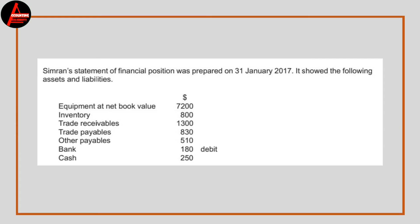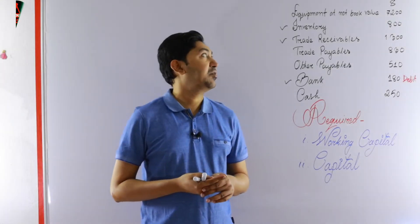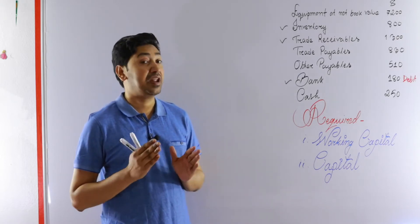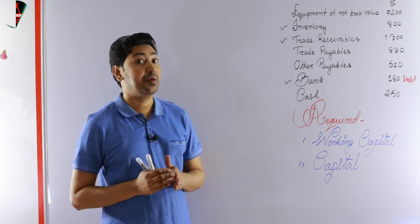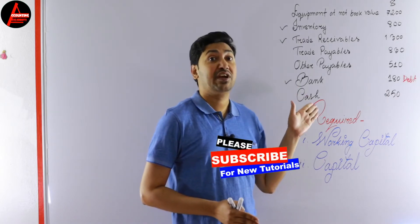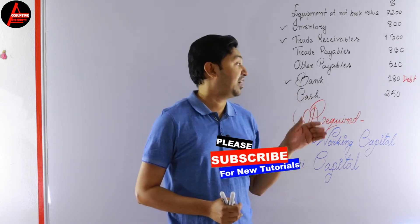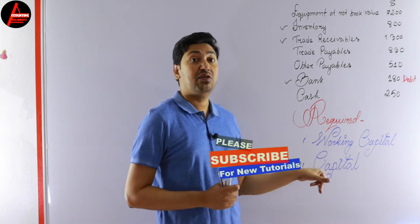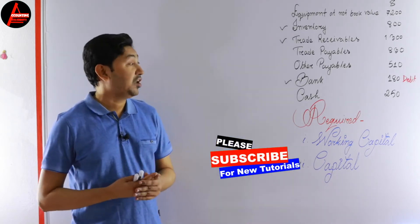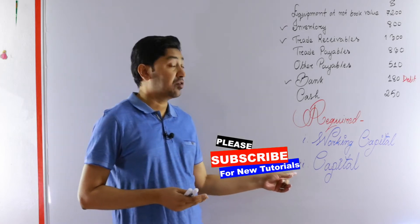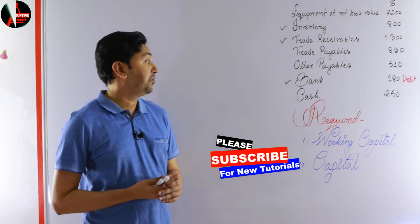It showed the following assets and liabilities. Statement of financial position means the balance sheet. The balance sheet is already prepared and from it these assets and liabilities were taken. From these items we have to calculate capital.